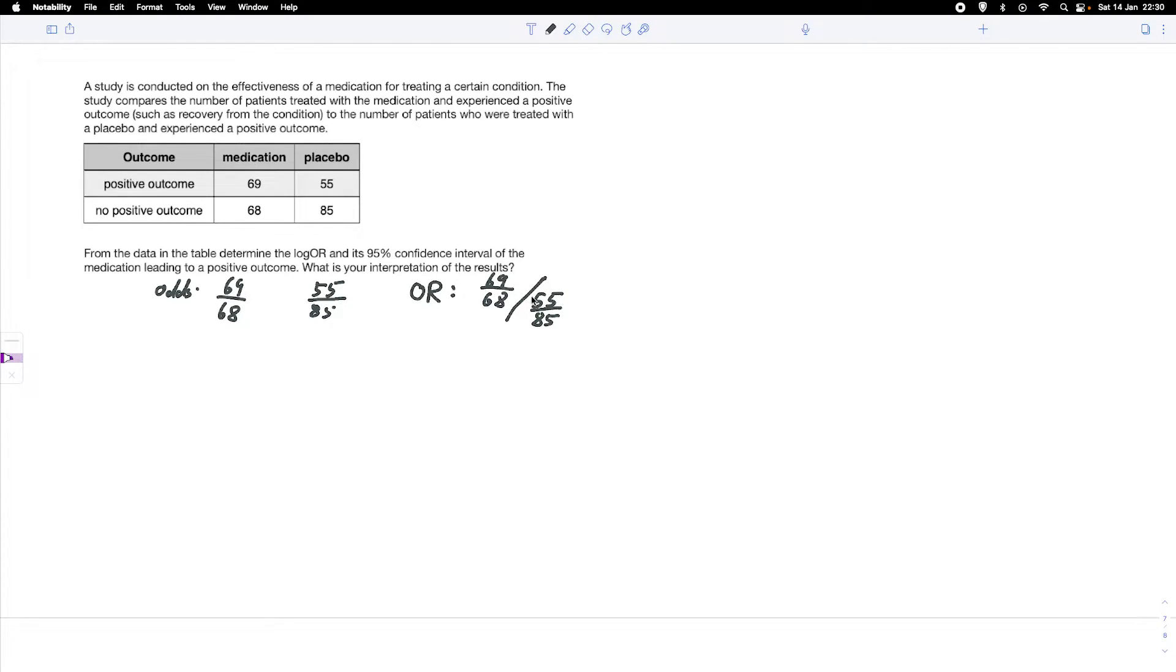Because there is a division of two fractions, we can write this in a slightly user-friendly way. So we have 69 over 68 times, using the laws of fractions, the odds ratio would give us a value of 1.57.